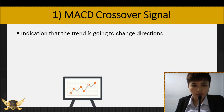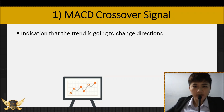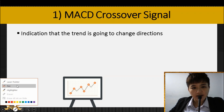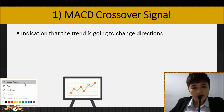The first way to look at MACD is when the MACD line crosses the signal line. When the MACD crosses the signal line, it tells you that the trend is going to change direction — going from bullish to bearish, or from bearish to bullish.